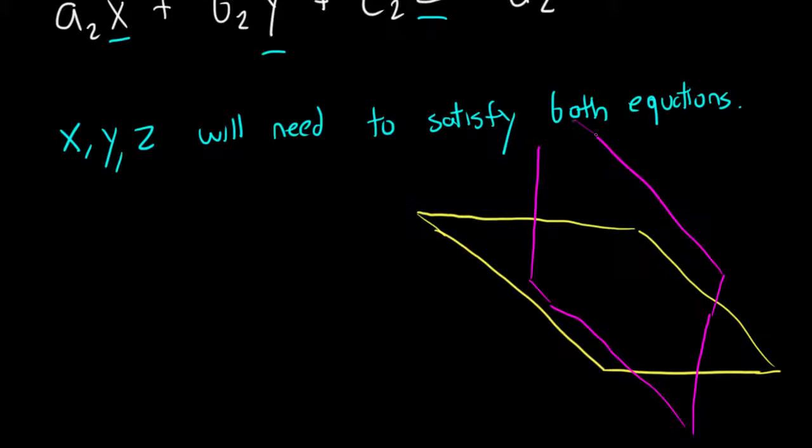You can visualize one of these is vertical, one of these is horizontal. We want values that are going to satisfy both of these planes. Well, essentially, both of these planes will only be satisfied on this intersecting line over here, the place where they both intersect.